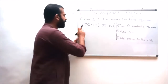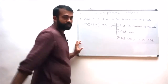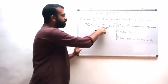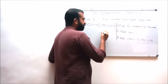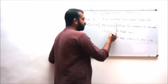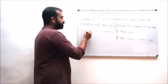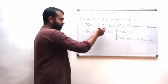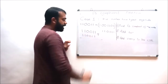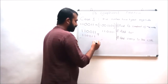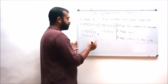The second question is: add 110011 with minus 001100. First, find the ones complement of the negative number: the ones complement of 001100 is 110011. The second step is to add these two numbers: 110011 plus 110011. Adding: 1 plus 1 results in 0 with a carry of 1; 1 plus 1 results in 1 (with carry in); 1 plus 0 results in 1.